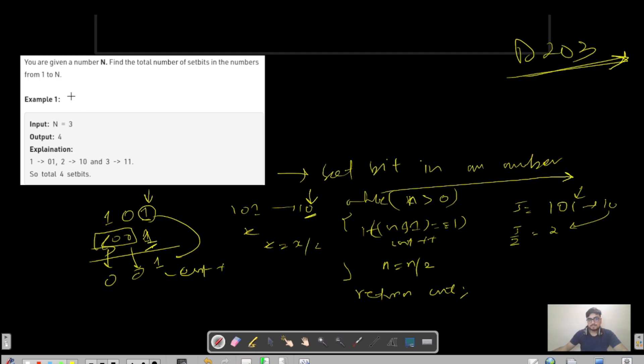We do x equals x divided by 2, which is nothing but a right shift. This is a very standard program. We run a while loop and keep operating. We do n equals n divided by 2 and check if n AND 1 equals 1. If the bit is set, we do count plus plus. At last we return count. This is the pseudo code for returning the count of set bits in a particular number.